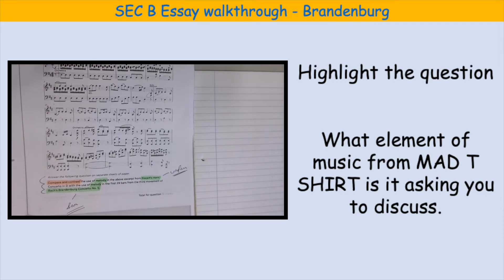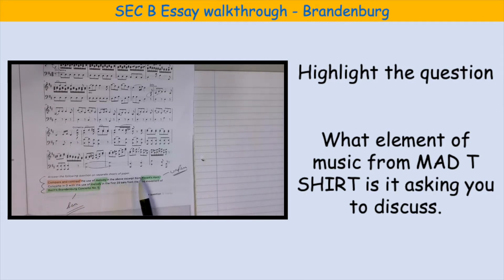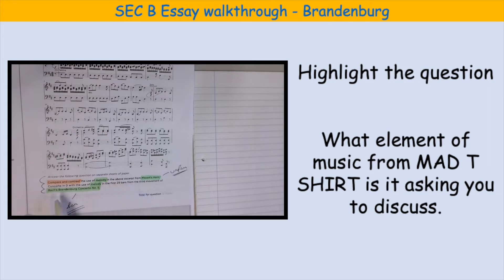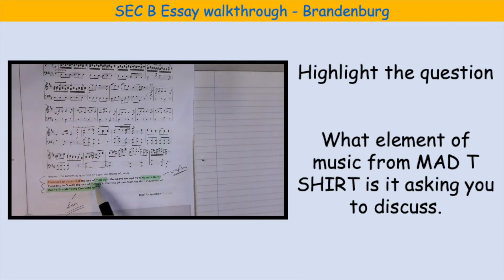I will read the question out for you. 'Compare and contrast the use of melody in the above excerpt from Mozart's Horn Concerto in D with the use of melody in the first 29 bars from the third movement of Bach's Brandenburg Concerto number five.' To break this question down, we are comparing and contrasting — that means what is similar and what is different — about the use of melody, which is the element of music we're talking about.